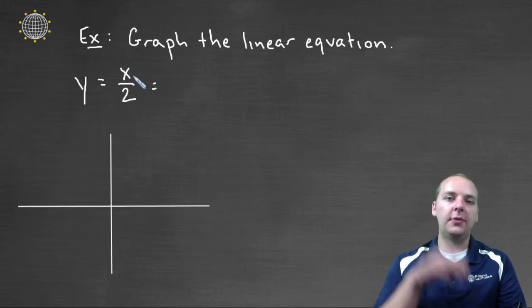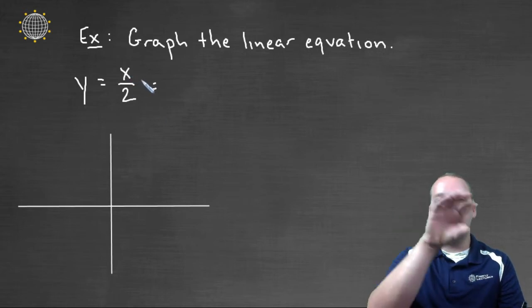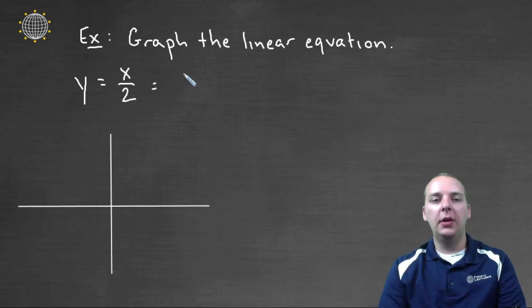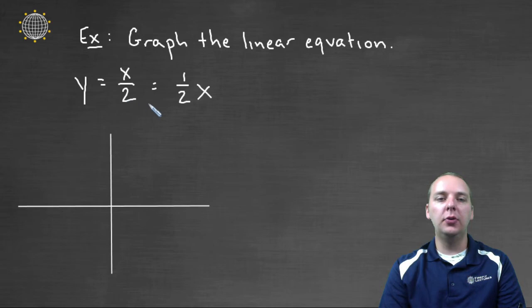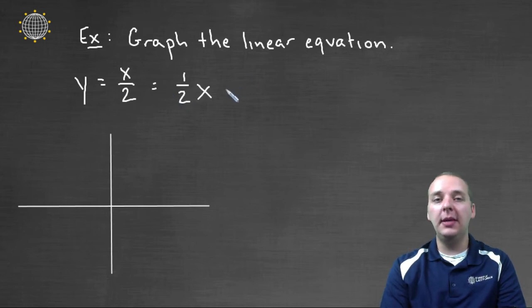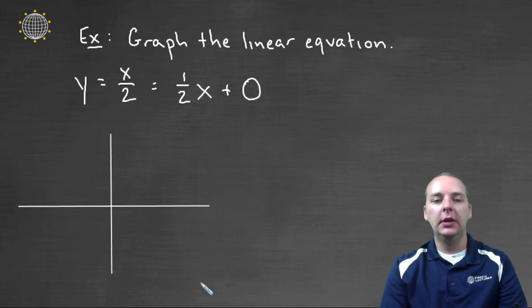So x over two and one-half x are the same. Just think about it. If you had six divided by two, that's three. But what's half of six? Well, that's also three, of course. So these are the same. And then if you don't have a b, no big deal. Let's put plus zero, because there's no b-value listed. So this is in slope-intercept form now. The one-half is the m, and the zero is the b.